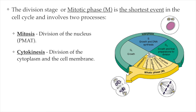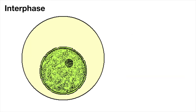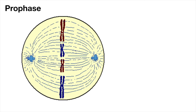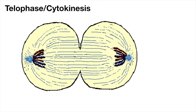I have this animation here that will go through the different stages of mitosis, starting with interphase, moving all the way through all the different stages of mitosis — which we call PMAT: prophase, metaphase, anaphase, and telophase. I want you to focus on what's happening to the nucleus, and more specifically, what is happening to the chromosomes. The animation goes from interphase, then the nuclear membrane disappears in prophase, then metaphase, anaphase, telophase, and cytokinesis.